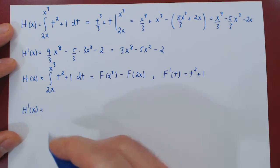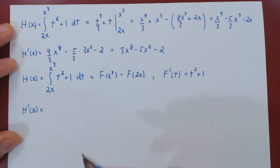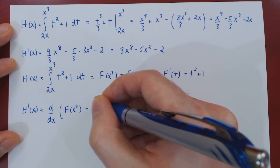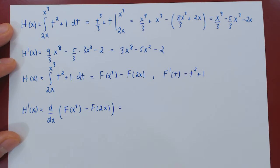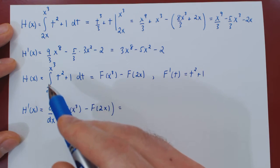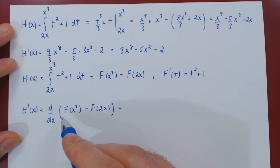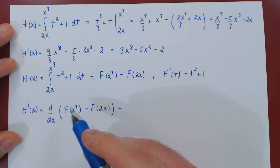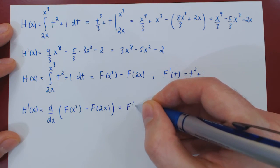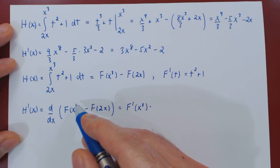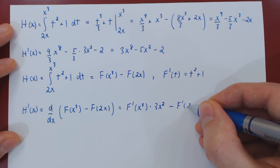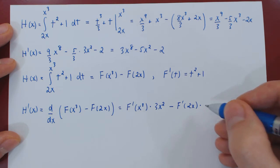This is our second solution. The derivative of h is the derivative of F(x³) − F(2x). We have to be careful: since these are compositions, we apply the chain rule. So: derivative of the outside function F′(x³) times the derivative of x³, which is 3x², minus F′(2x) times the derivative of the inside function, which is 2.